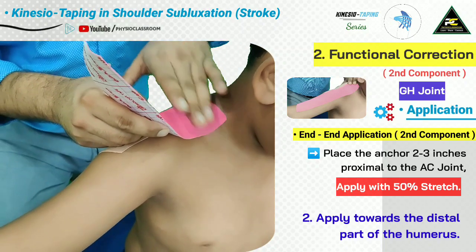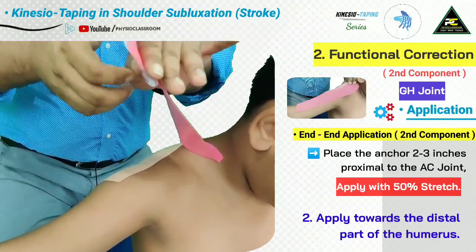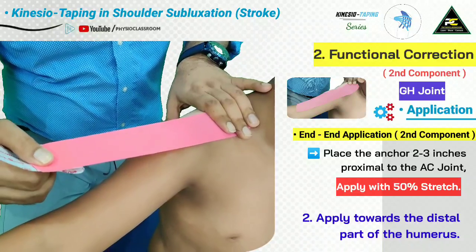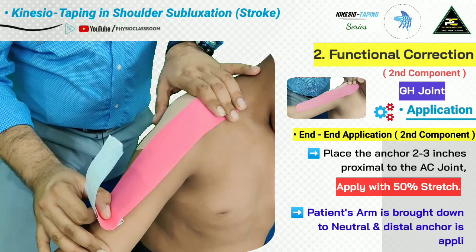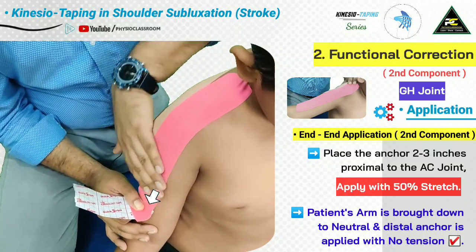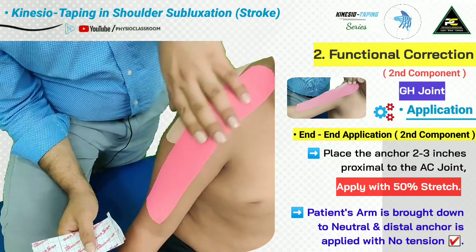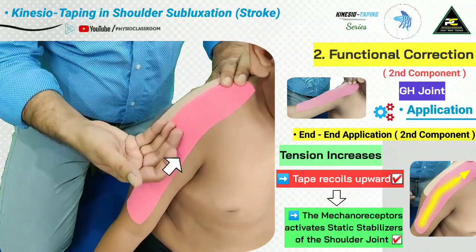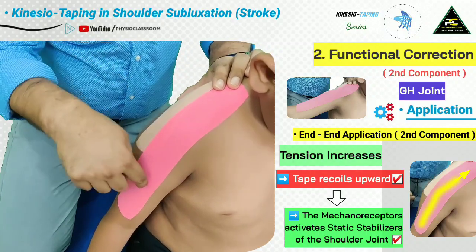Rub the anchor properly, then remove the paper backing, leaving some for the distal anchor. While stabilizing the proximal anchor, stretch the tape to around 50 percent tension and place it over the distal part of the humerus. Ask the patient to lower the arm, then slide the hand downward, applying friction, with the last part of the tape applied with no tension. Because there was 50 percent tension with the arm abducted, as the arm comes down the tension increases further, and the recoiling effect of the tape in the superior direction activates mechanoreceptors in the skin, helping activate muscles that counteract the inferior pull of gravity.